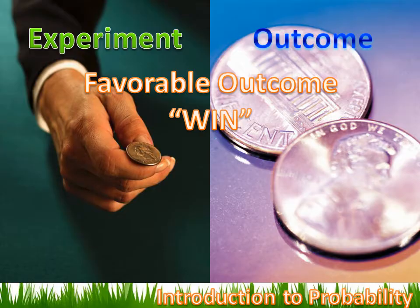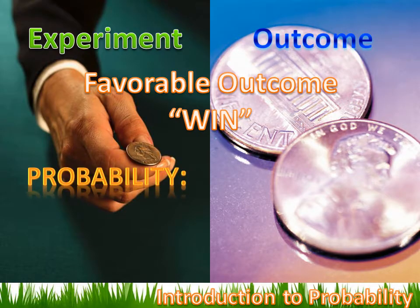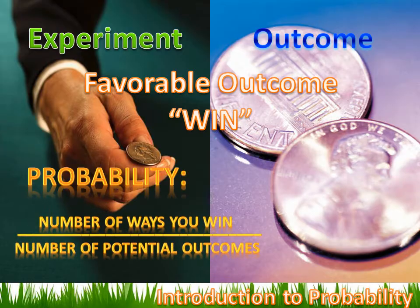You probably know the probability of it landing on heads — it's 50/50, it's 50 percent. But how did we come up with 50 percent? How did we come up with the probability? Well, here it is — this is the learning moment for this entire lesson. This is the only thing you've got to memorize: probability is the number of ways you can win divided by the number of potential outcomes.